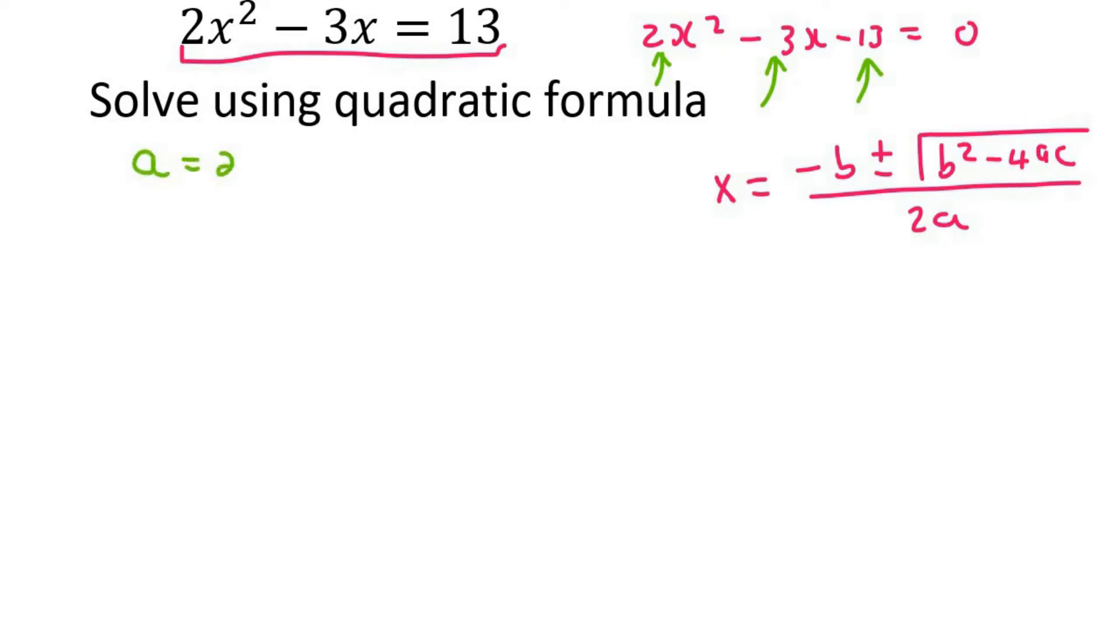So a will be 2, b will be -3, and c will be -13.